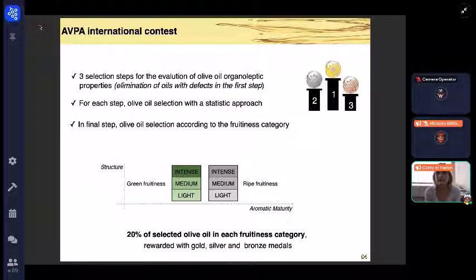These categories include intense, medium, or light green fruitiness, and intense, medium, or light ripe fruitiness. Based on their fruitiness score, the best samples are chosen so that 20% of the oils are awarded in each category.